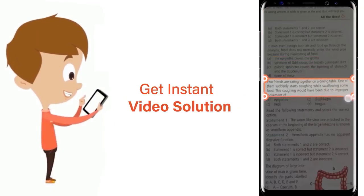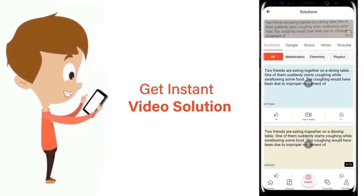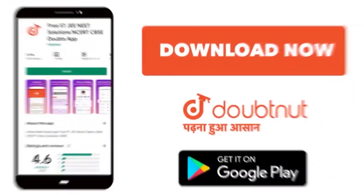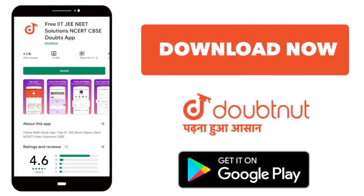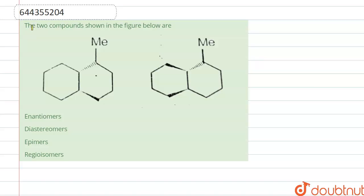Hello everyone. Here the question is about two compounds shown in the figure. We have to find whether they are enantiomers, diastereomers, epimers, or regioisomers.